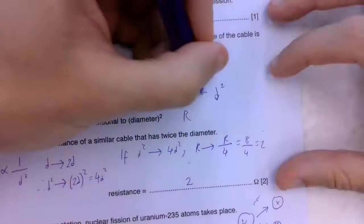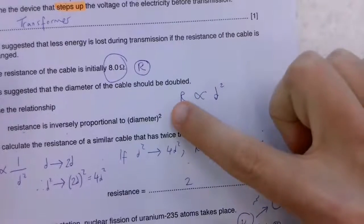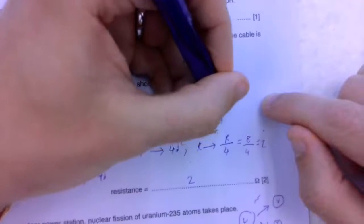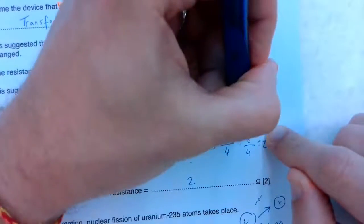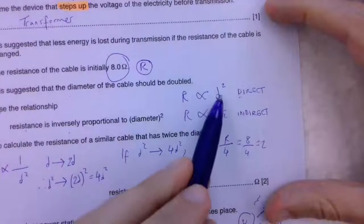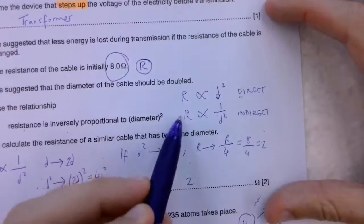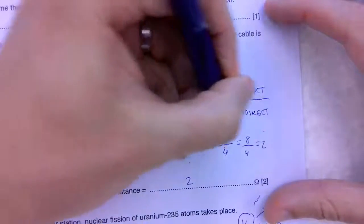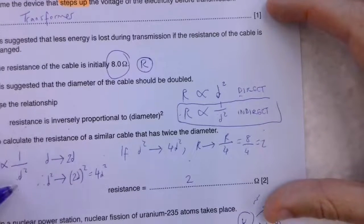There are two ways, two relationships really we have. We have directly proportional and inversely proportional. Directly proportional really means this: if I double this side, I will double this side. We also have inversely proportional. Direct, I double this, I double this. Indirect, I double this, I halve this. In this case we're looking at the second one, which is indirect. R goes proportional to 1 over D squared.